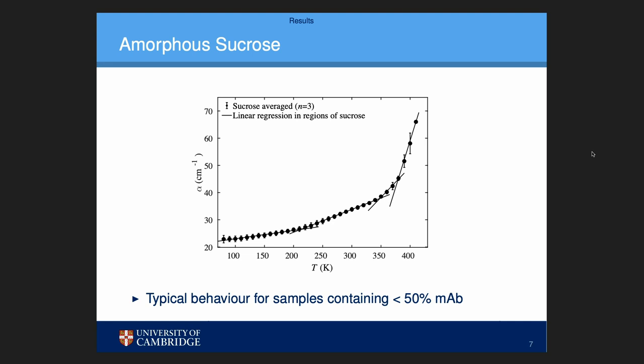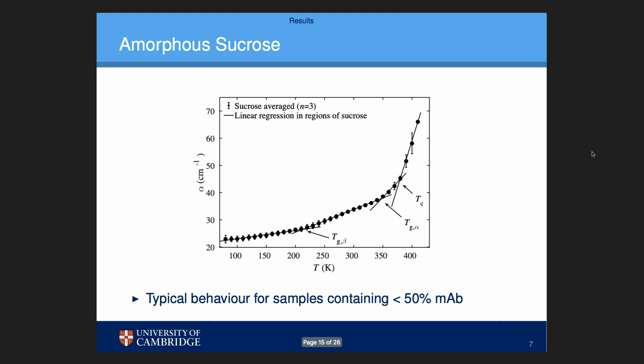As the absorption increases with temperature, there are certain regions where the increase is linear, and then there are crossover points between those linear regions. At those crossover points — labeled here — are the so-called glass transition temperatures, Tg_beta and Tg_alpha, and also the previously mentioned crystallization temperature of the sucrose.